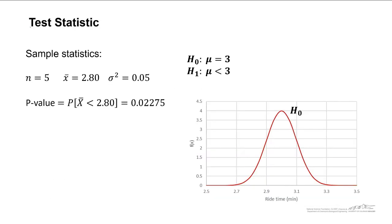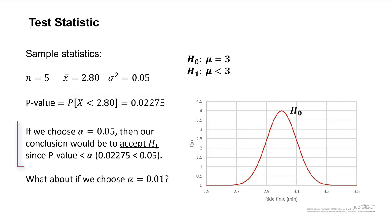Let's take a look at our examples. We calculate a p-value of 0.02275. If we chose alpha of 0.05, then our conclusion would be to accept the alternate, since our p-value, 0.02275, is less than our alpha of 0.05.